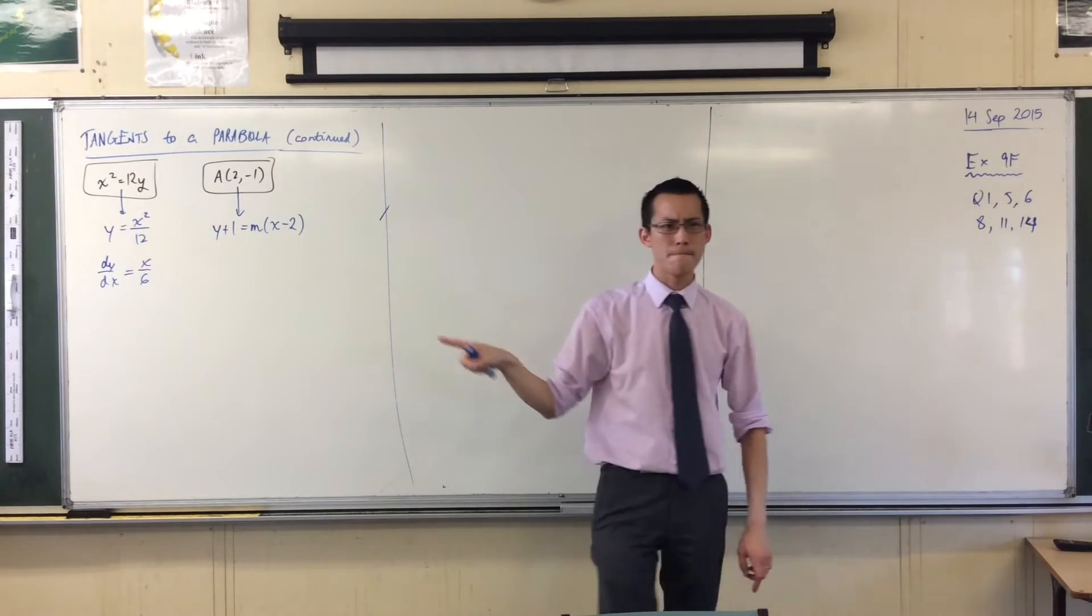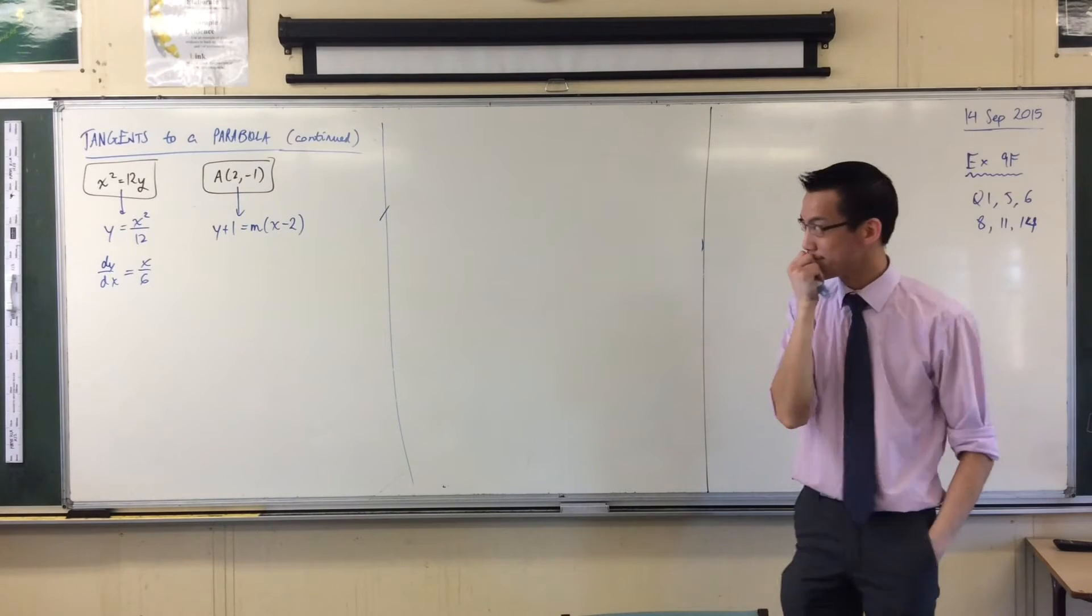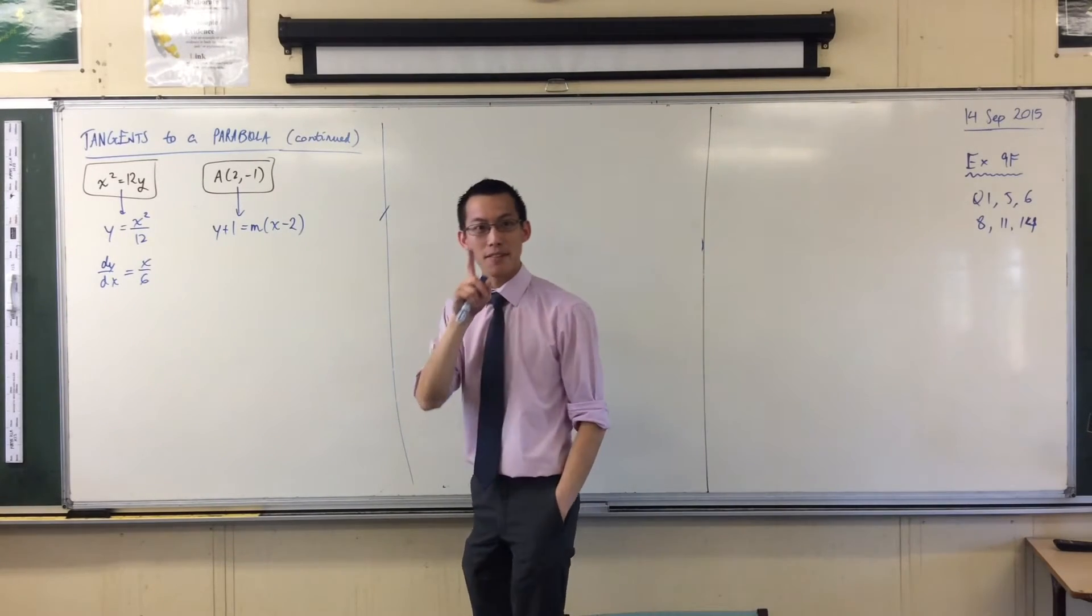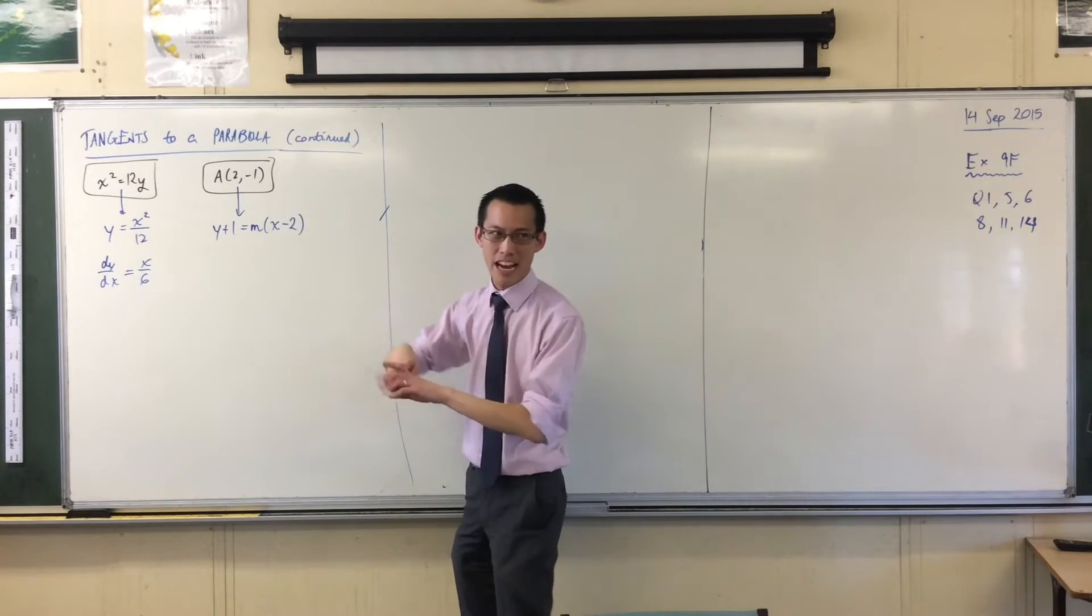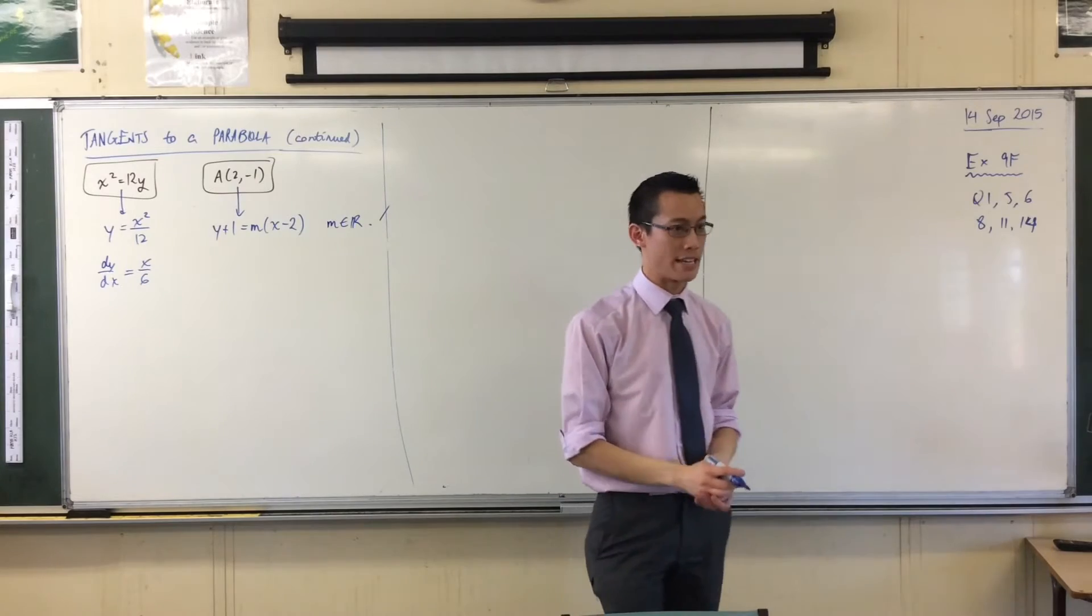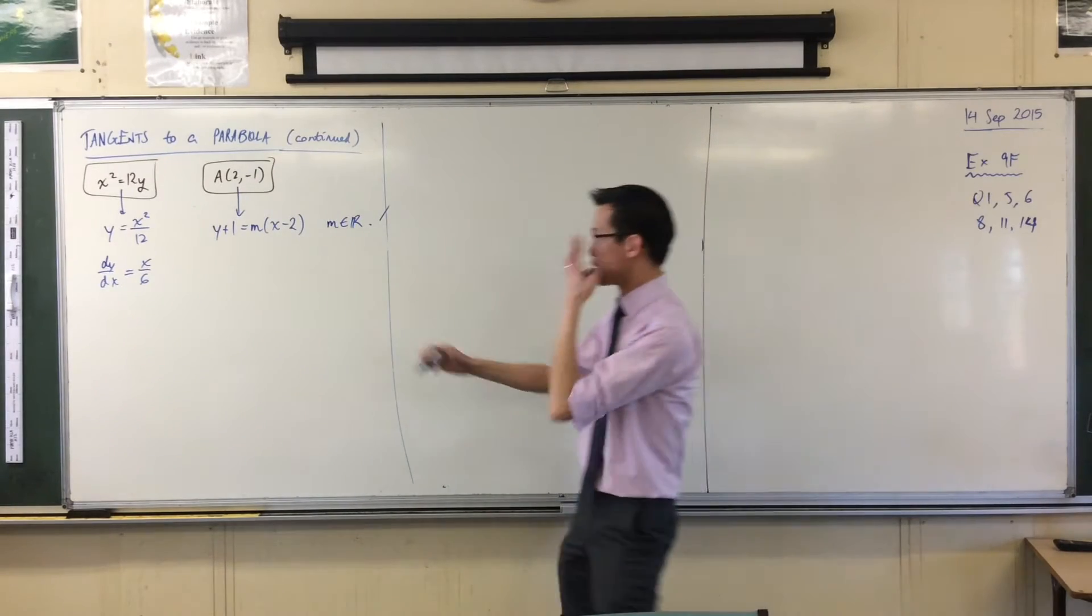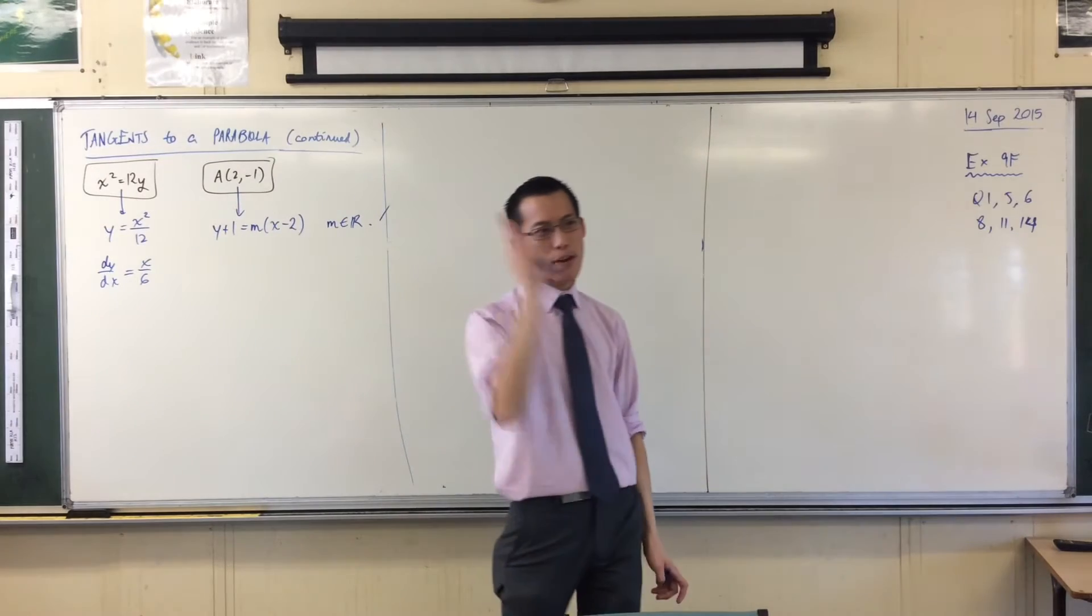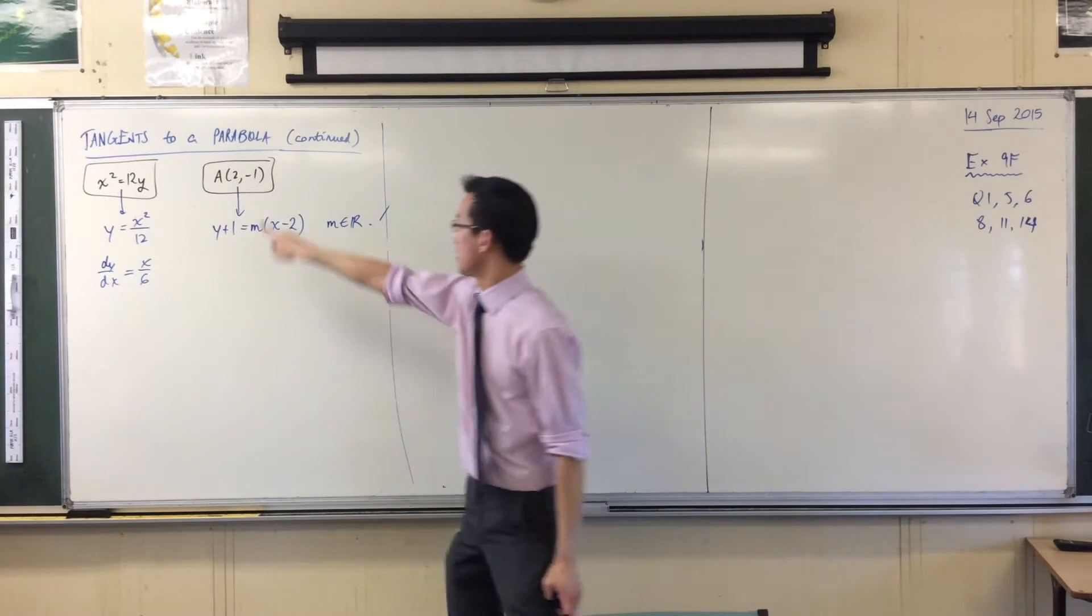Now, what is this? What is this line? With an unknown gradient, any possible line going through that one? Very good. M, right, I should have written on here. M is actually, you know, some number. Of course, we usually write it for gradient, but I don't know what it is. So, therefore, what this represents, this equation, is every possible line that goes through there.